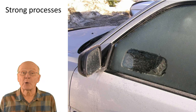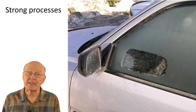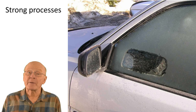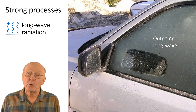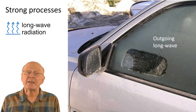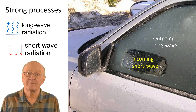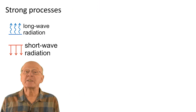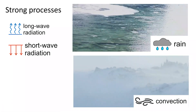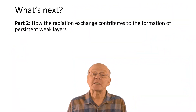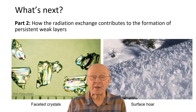Summarizing the strong processes: when the sky is mostly clear, radiation often dominates the energy exchange at the snow surface. This morning photo shows frost that formed overnight on a car window due to strong longwave cooling to a clear sky. In the morning, when incoming shortwave radiation from the sun hit the mirror, it warmed and melted the frost. In part three of this video series, we'll get to rain and wind, which sometimes strongly contribute to the energy exchange at the snow surface. But next, in part two, we'll explain how the radiation exchange at the snow surface contributes to the formation of persistent weak layers.